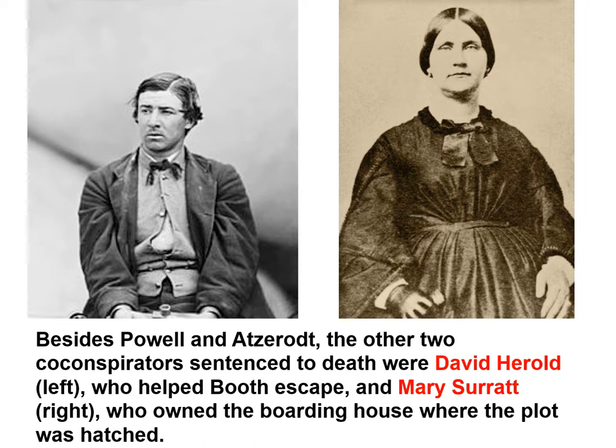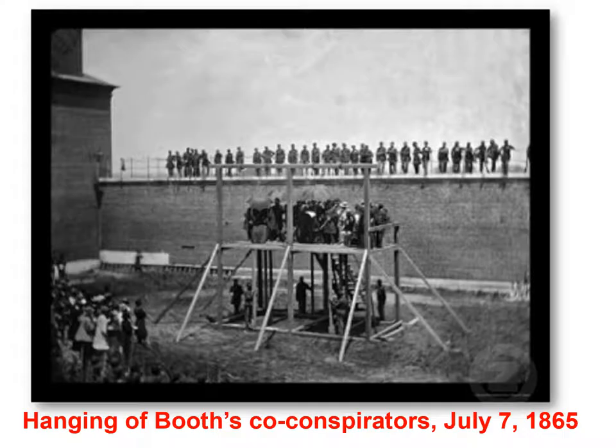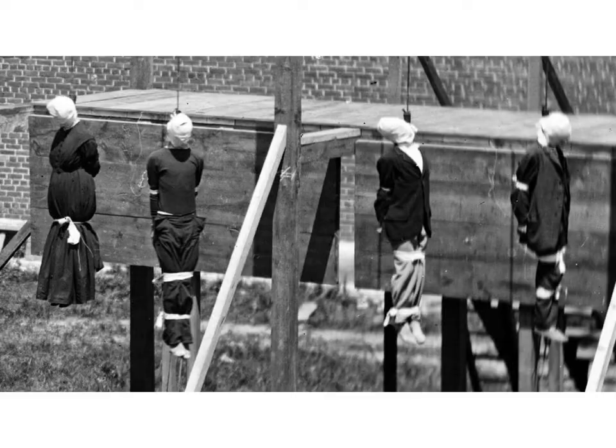Besides Powell and Atzerodt, the other two co-conspirators sentenced to death were David Herold, who helped Booth escape, and Mary Surratt, who owned the boarding house where the plot was hatched. On July 7th, 1865, the Booth co-conspirators were hanged in the yard of a military arsenal in northeast Washington. If you look closely at the photograph, you can see they're holding an umbrella over Mary Surratt — because she was a woman, they were protecting her from the sun right before she was hanged. Here they are after the plank was pulled out and they had died.